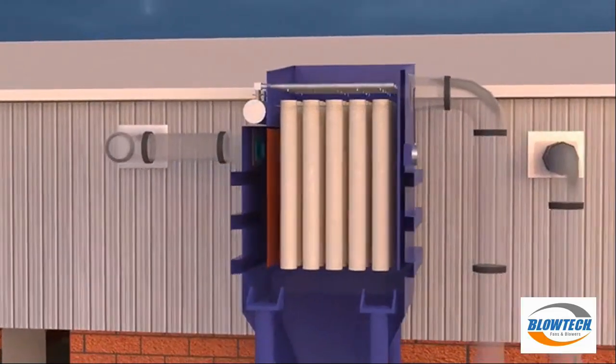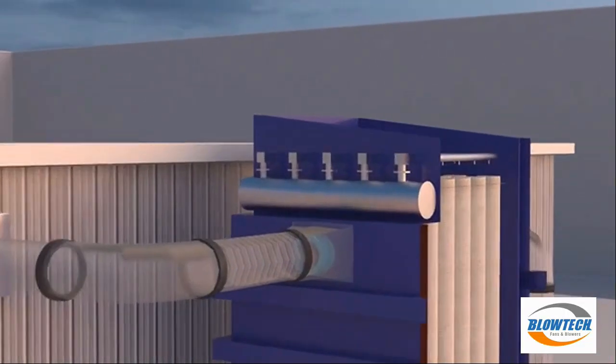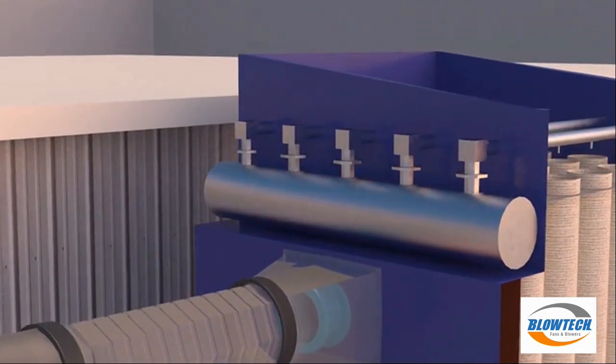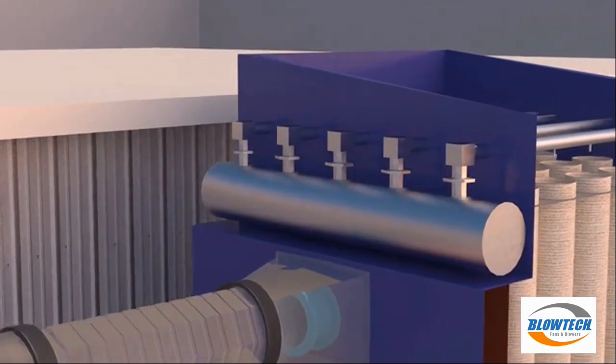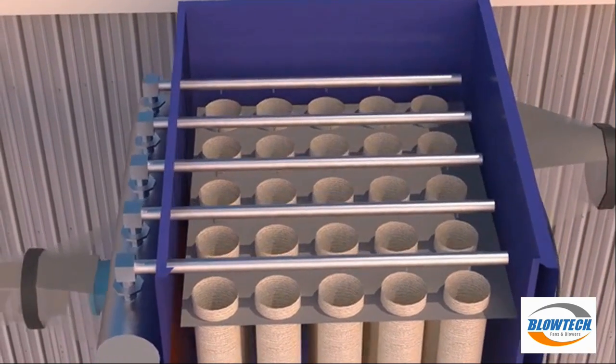Air stored in the header is released, which is carried by the blow pipes. This high-pressure air is then released in the filter bags, one row at a time.